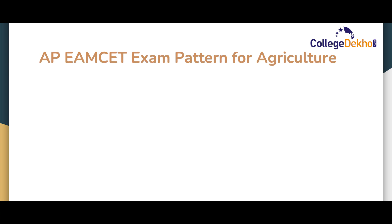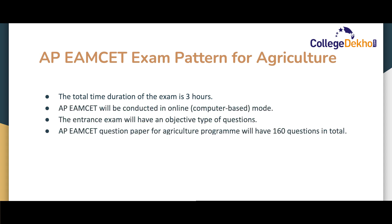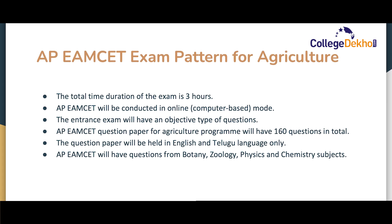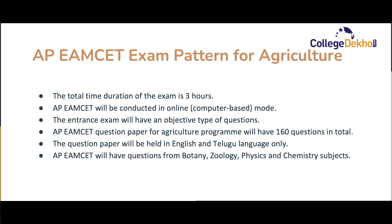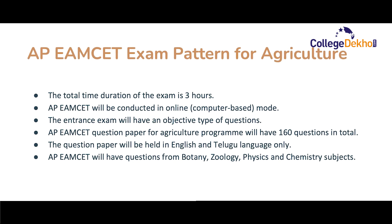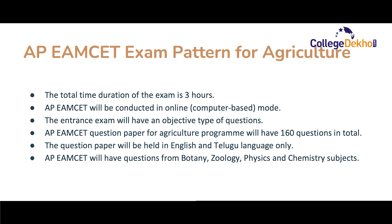Now let us look at the AP EMSET exam pattern for agriculture. The total time duration of the exam will be three hours. The exam will be conducted in online mode. The entrance exam will have objective type questions. The AP EMSET question paper for the agriculture program will have a total of 160 questions, and the medium of the paper will be English and Telugu. AP EMSET will have questions from botany, geology, physics, and chemistry subjects for the agriculture exam.